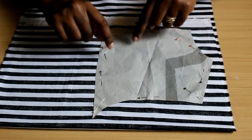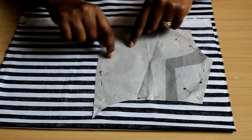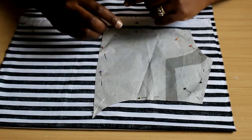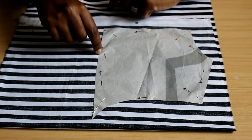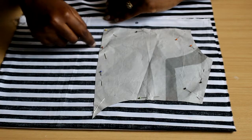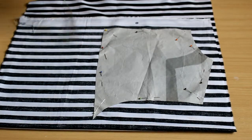If you have a pattern you've drafted and you've already included seam allowance within the pattern, you can just cut. But if it's a pattern like this one where I haven't included the seam allowance, this is the point where you should add your seam allowance.